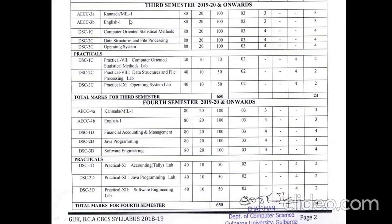In the third semester, you continue with the same language — Kannada or Hindi — whichever you chose in semesters one and two, along with English. There is no Environmental Studies or Indian Constitution paper in the third and fourth semesters. The three computer-related subjects are: DSC1C — Computer Oriented Statistical Methods (100 marks, 80 external, 20 internal), DSC2C — Data Structure and File Processing (100 marks), and DSC3C — Operating System (100 marks, 80 external, 20 internal).